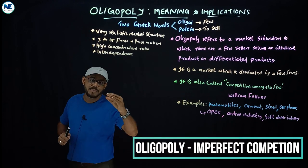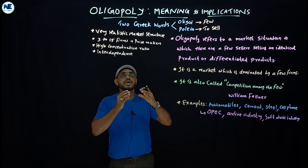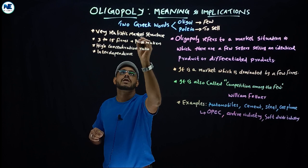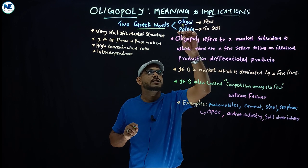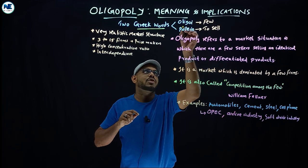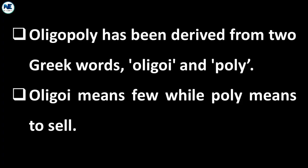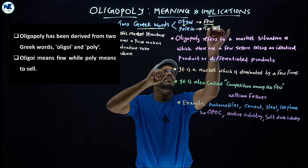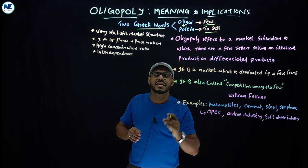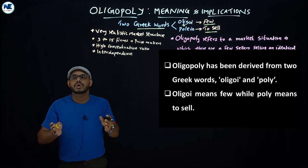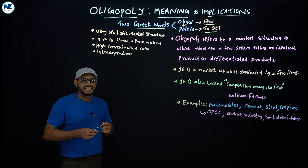Let us start with how this word is derived. Oligopoly is derived from two Greek words: oligo and poly. Oligo means a few, and poly means to sell. So oligopoly means a few sellers or a few firms.